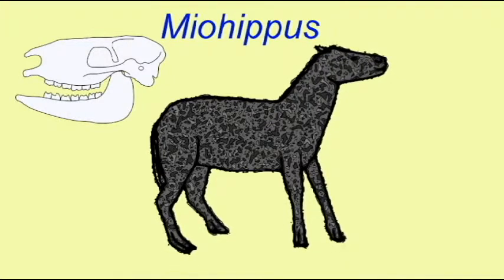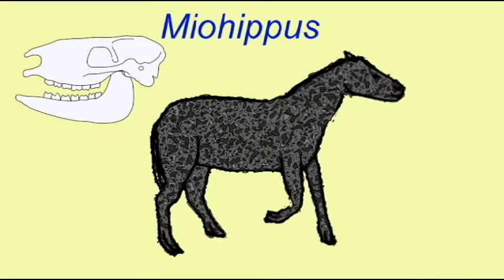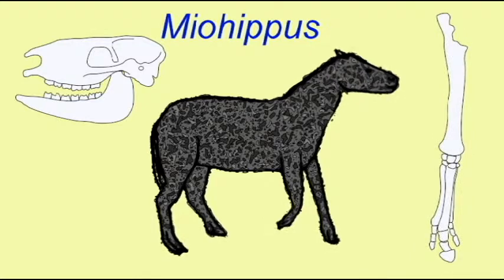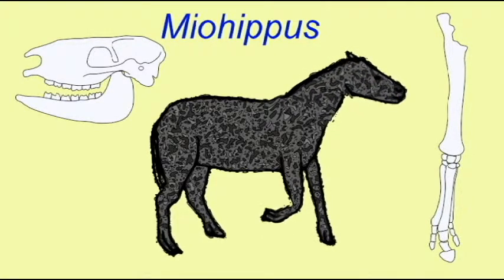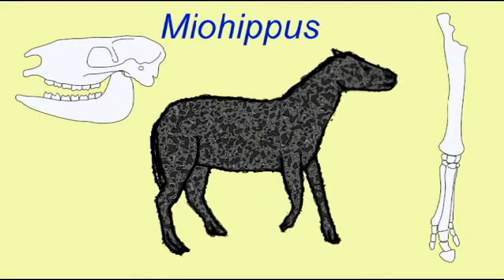At first, they did lose the fourth toe. That was gradually reduced in the early horses until it was a splint, and then disappeared altogether so that the front feet lost their fourth toe.